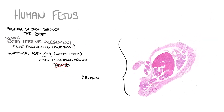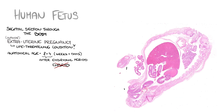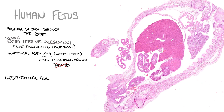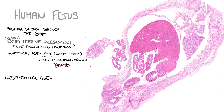The crown-rump length of such a very young fetus is about 27 to 31 millimeters and its weight does not exceed 3 grams. In terms of gestational age, which means the time from the onset of the last menstrual bleeding, it will be a pregnancy of 10 plus 4, that means 2 weeks more.